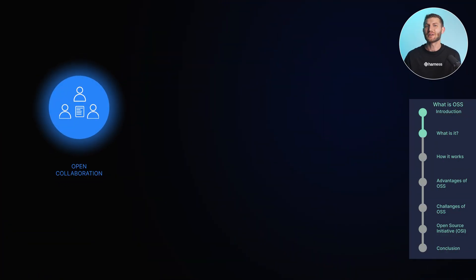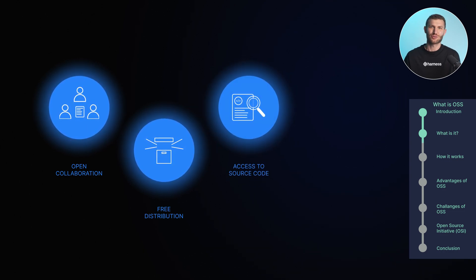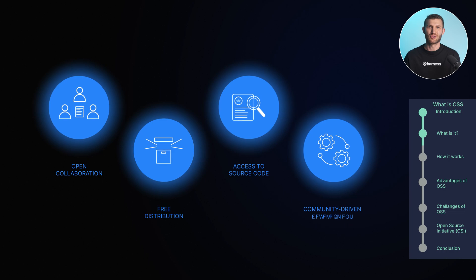Key principles include open collaboration — anyone can contribute by submitting code changes, bug fixes, or new features. Free distribution: OSS can be freely distributed, copied, and used without licensing fees. Access to source code: users can inspect, modify, and learn from the code. Community-driven development: a vibrant community collaborates, provides feedback, and drives the software's evolution.